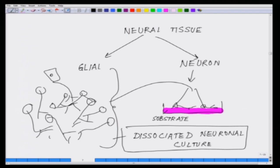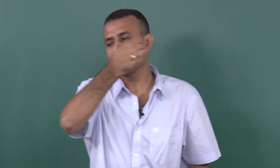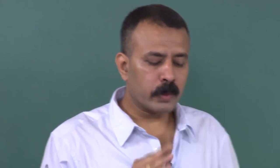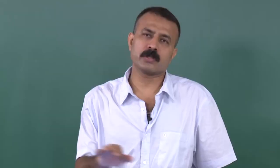Now you can approach the individual cell with an individual electrode — a sharp electrode — and monitor several events. You can put compounds A, B, C and figure out what they do. This technique gives you access to the individual cell in a dissociated culture.